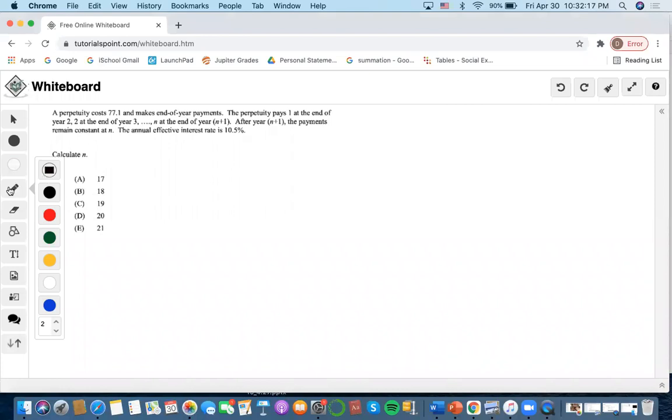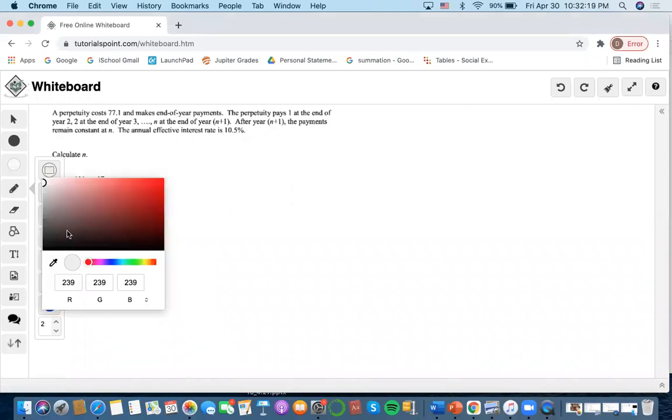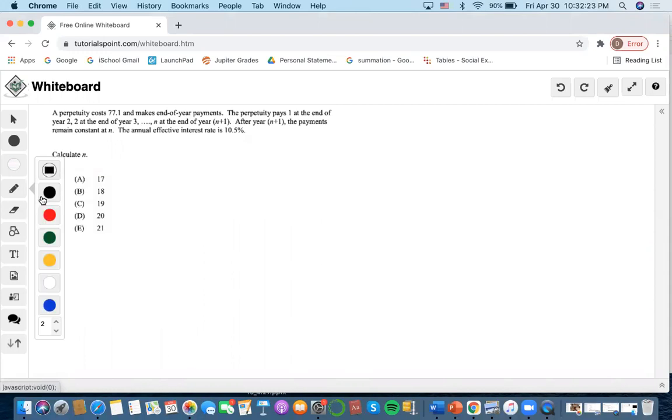Perpetuity costs 77.1. It pays 1 at time 2, 2 at time 3, and so on until it reaches n+1 with level payments of n throughout.